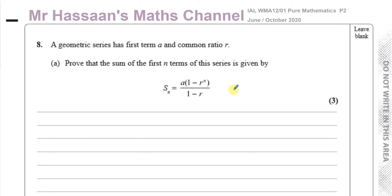This question is about geometric series. We're told that a geometric series has a first term A and a common ratio R, and we have to prove that the sum of the first n terms is given by this formula. This is one of the proofs that we're supposed to know, even though they give the formula in the formula book.